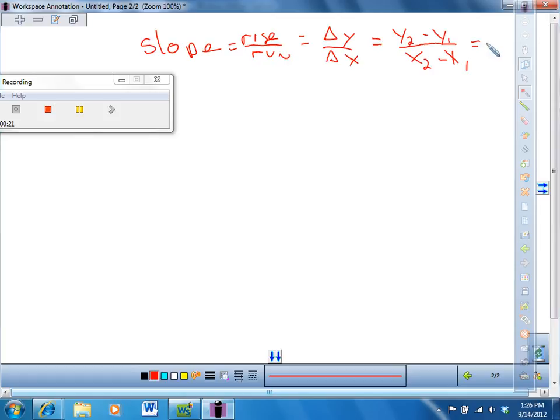Who knows what letter they use for slope? M. Anyone know why they use the letter M for slope? I think it's a French guy who came up with it because it came from montagna, for mountains, because mountains have slope. That's why they use the letter M.